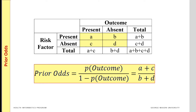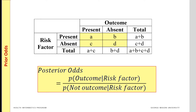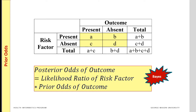It is important to understand the relationship between likelihood ratio and prior and posterior odds. Prior odds is defined as the probability of the outcome occurring divided by the probability of it not occurring, so it is a measure of how likely the outcome is before we even consider the risk factor. Posterior odds is the odds of the outcome after we have considered the risk factor. Likelihood ratio connects prior odds to posterior odds, telling us how we should revise our prior uncertainty in light of the observation of the risk factor. This formula is known as the Bayes formula, and we will return to it after examining some examples.